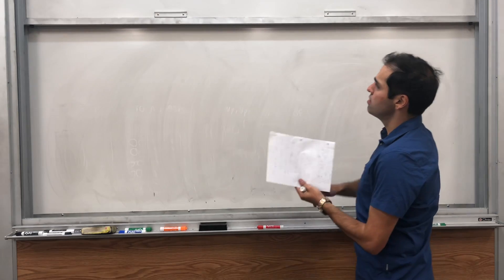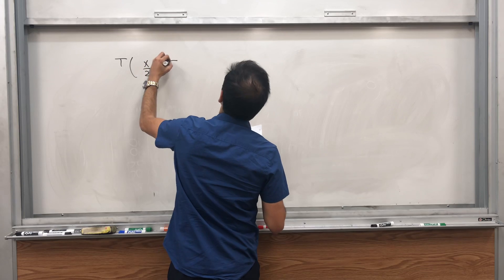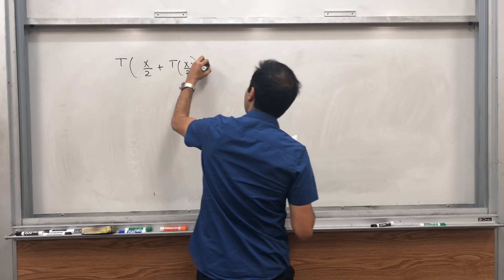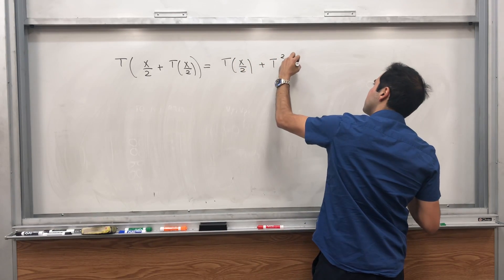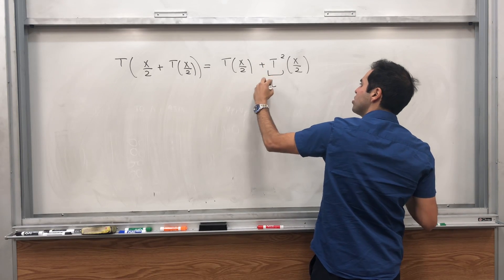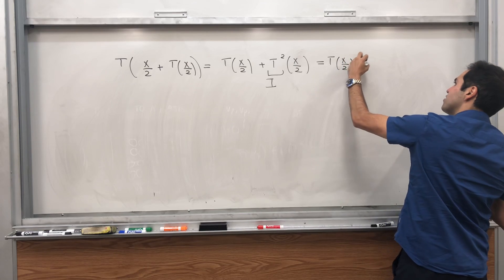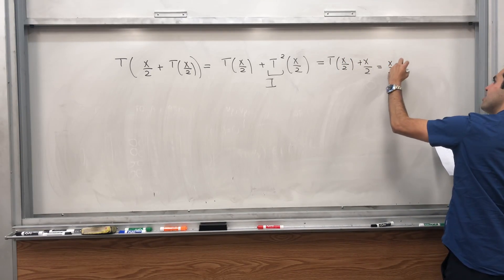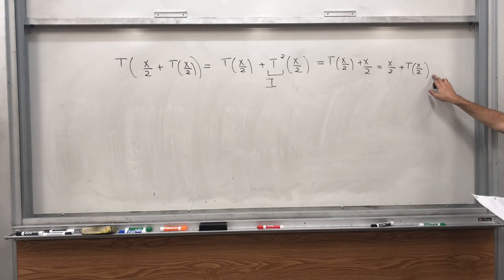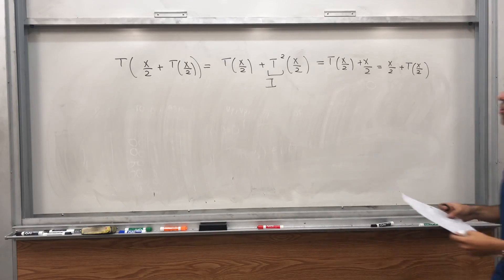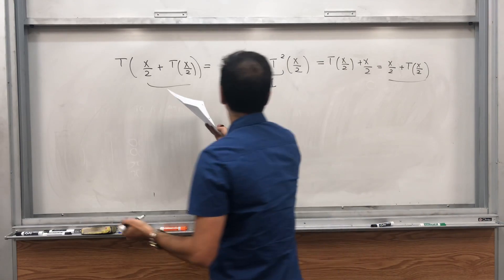And the reason is, well let's calculate T of x over 2 plus T(x) over 2. Well that is T(x) over 2 plus T squared of x over 2. But remember T squared is the identity, so we get T(x) over 2 plus x over 2, which is x over 2 plus T(x) over 2. Cool, huh? So this vector is a fixed point, T literally does nothing to this, so it is in the fixed point space.